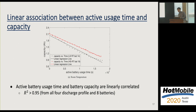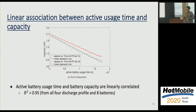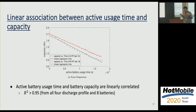The authors also explore the linear association between active battery usage time and battery capacity, building a model to predict battery capacity from active usage time. The R-squared values are over 0.95 across four discharge profiles and eight batteries.